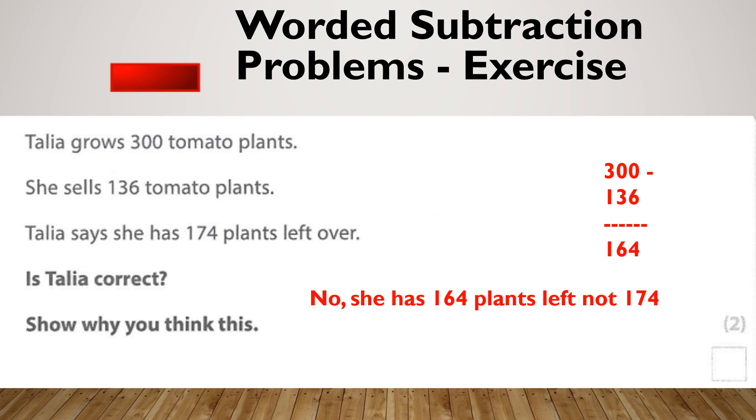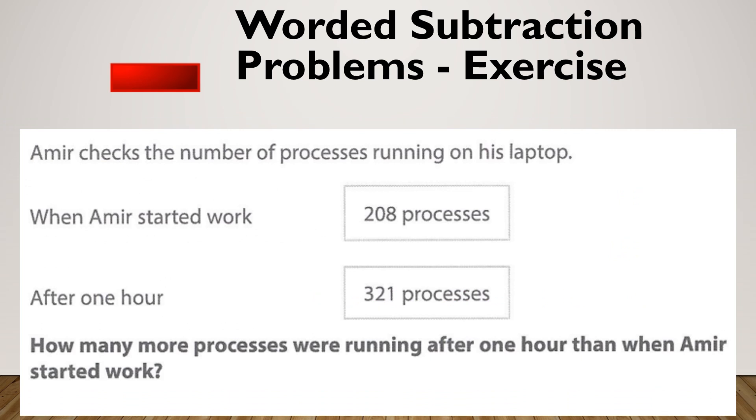Let's look at one more. Amir checks the number of processes running on his laptop. When he started work, there were 208 processes, and after an hour, 321. How many more processes were running after one hour than when Amir started work? Let's see that answer. So it was a takeaway. It was 113. How many more? So I wanted to know the difference between these numbers.